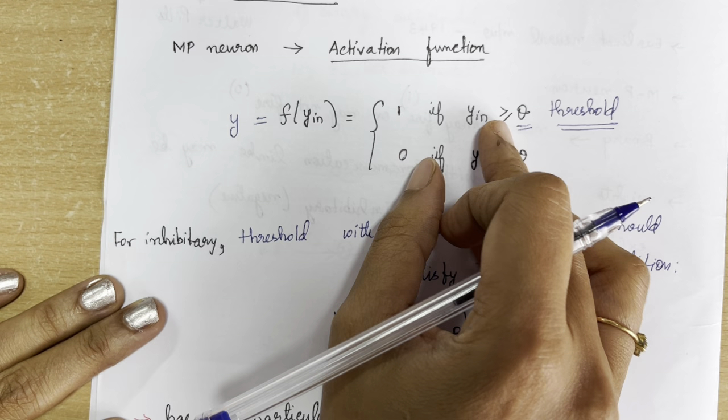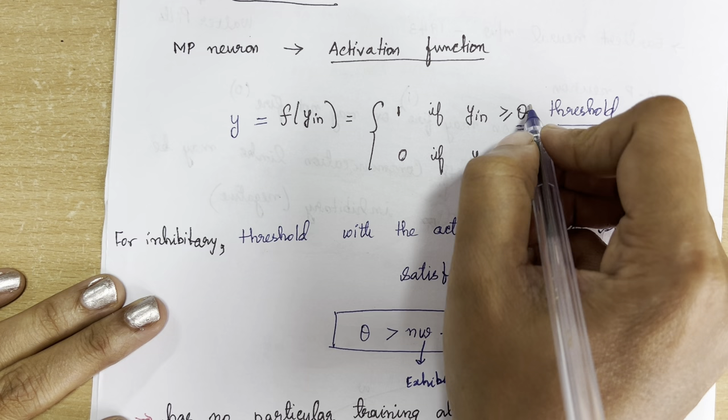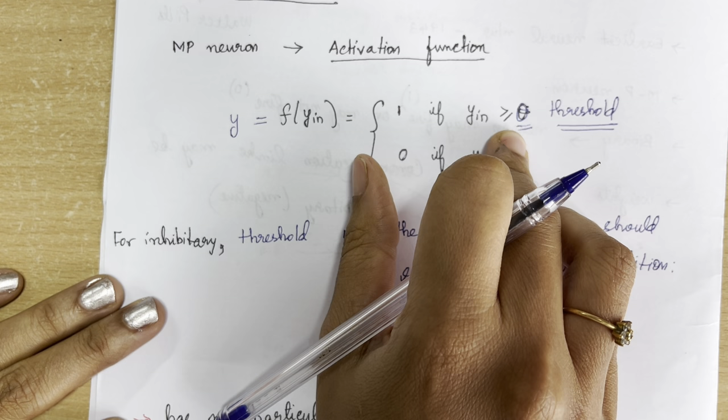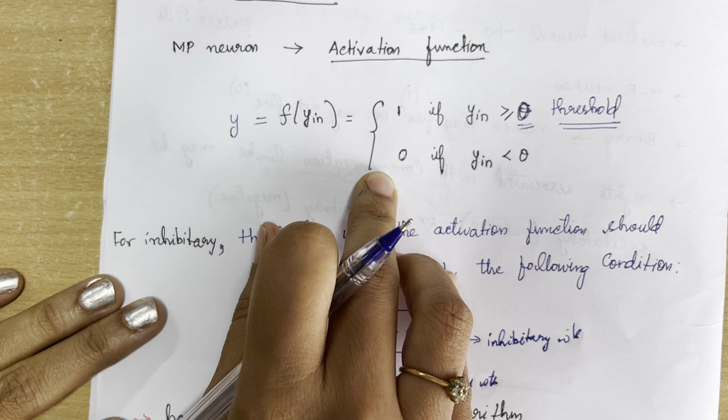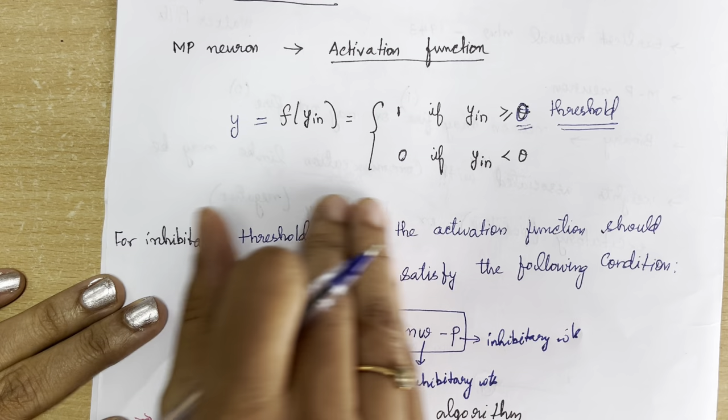The output y will be equal to f(y_input), where we apply the threshold value. If y_input is greater than or equal to theta — the threshold value represented by theta — then the neuron will fire and give an output of 1. If it is less than the threshold value, the neuron will not fire and the output will be 0.